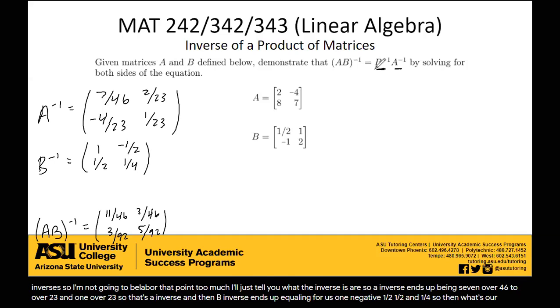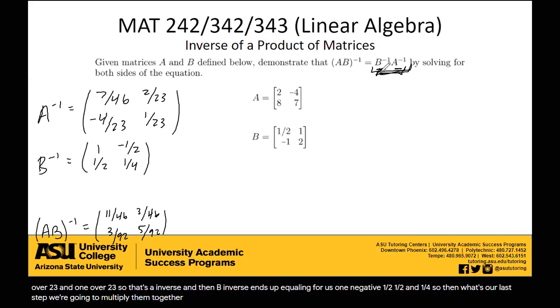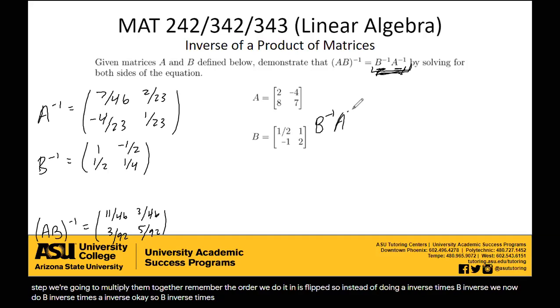So then what's our last step? We're going to multiply them together. And remember, the order we do it in is flipped. So instead of doing A inverse times B inverse, we now do B inverse times A inverse. Okay?